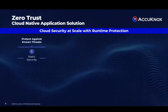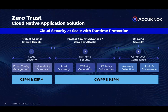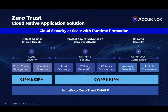We help you get to Zero Trust in three easy steps. First is to protect yourself against known vulnerabilities, also called CSPM, or Cloud Security Posture Management, or KSPM, Kubernetes Security Posture Management. The next step is to address zero-day attacks, and this requires advanced defenses such as kernel hardening, application firewalling, and micro-segmentation. This is what our CWPP delivers.